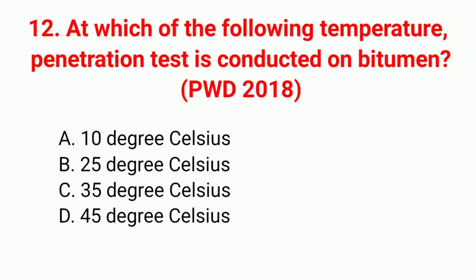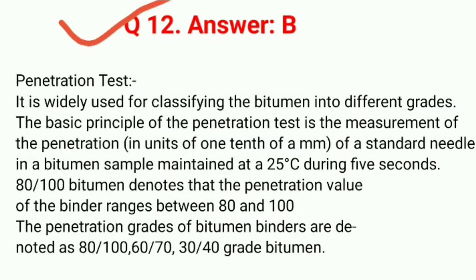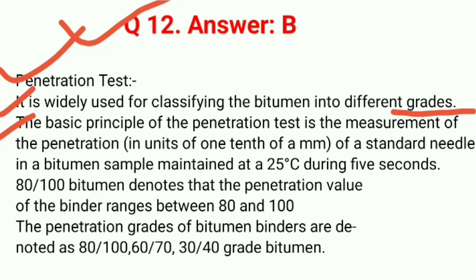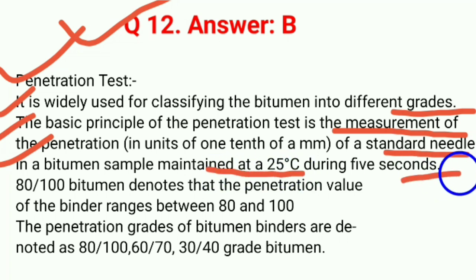Question 12: The correct answer is B: penetration test. It is widely used for classifying bitumen into different grades. The basic principle is measurement of penetration of a standard needle into a bitumen sample maintained at 25°C during 5 seconds. 80/100 bitumen denotes that the penetration value ranges between 80 and 100. Grades are denoted as 80/100, 60/70, 30/40.